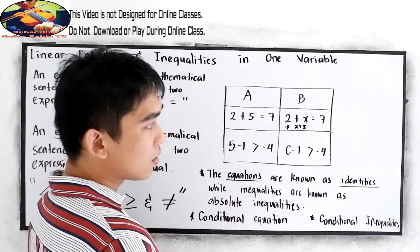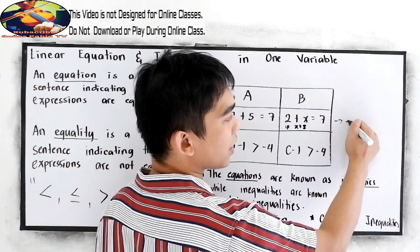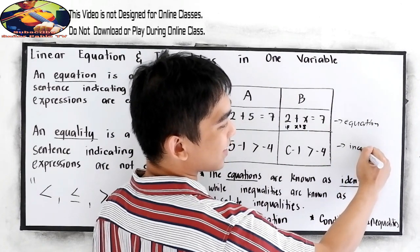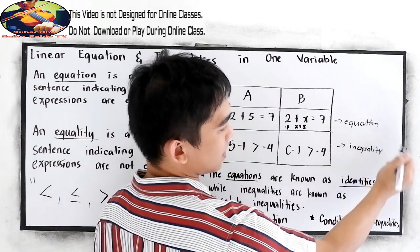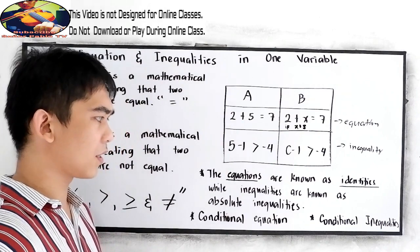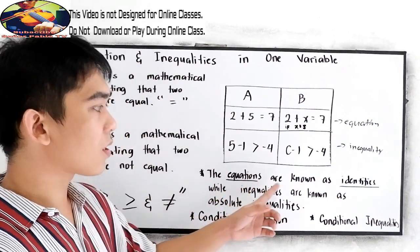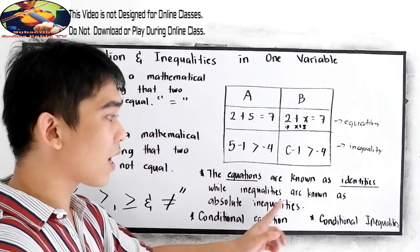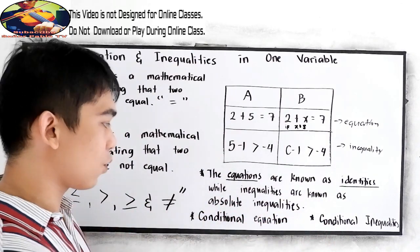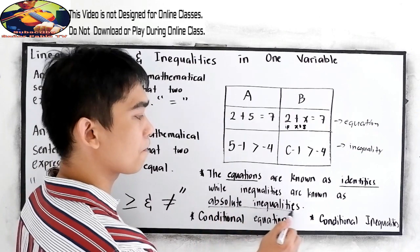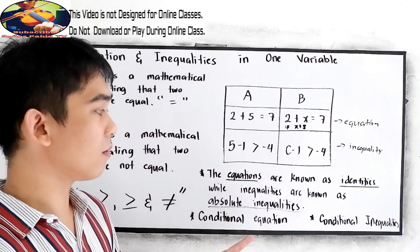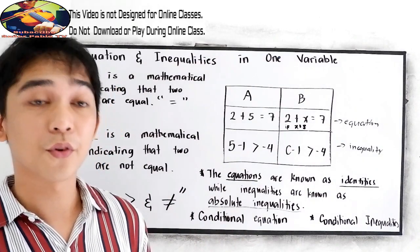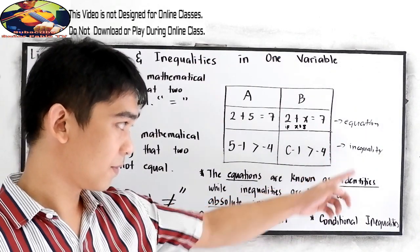The first example is an equation, and the second is an example of an inequality. Equations are known as identities, while inequalities are known as absolute inequalities. We also have conditional equations and conditional inequalities.